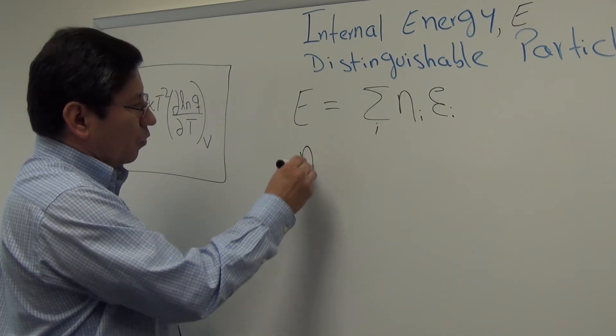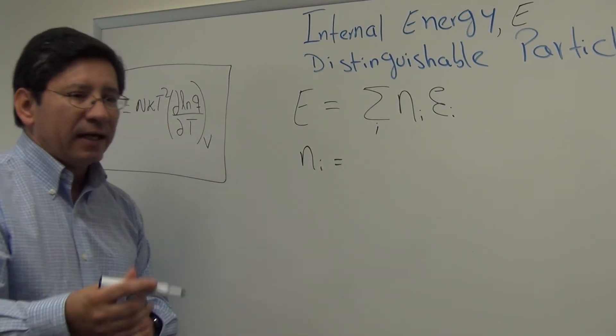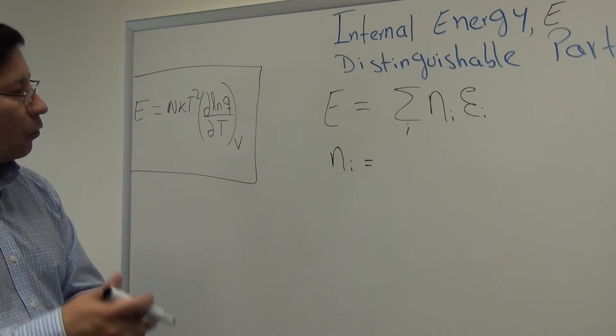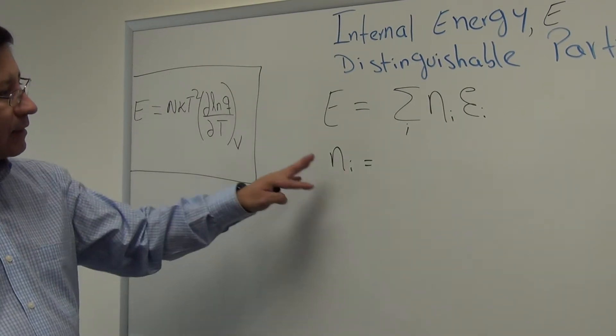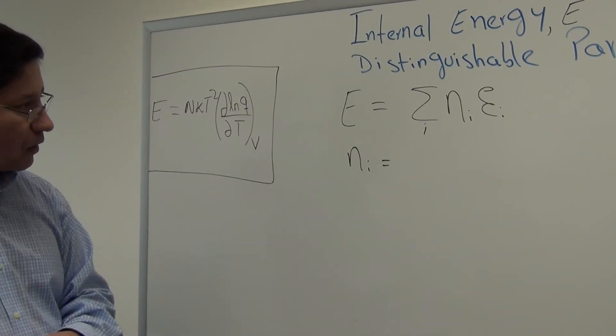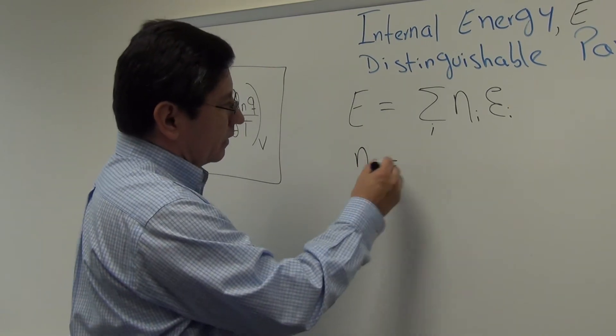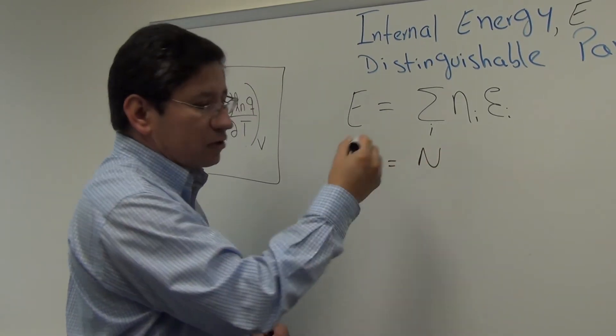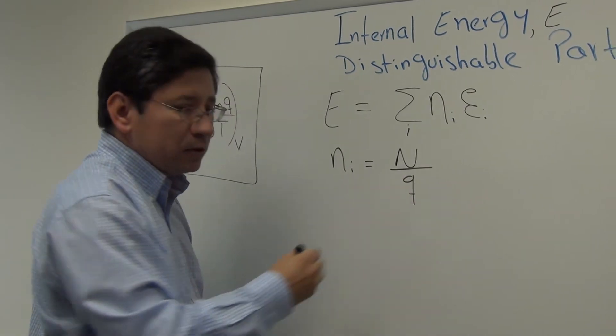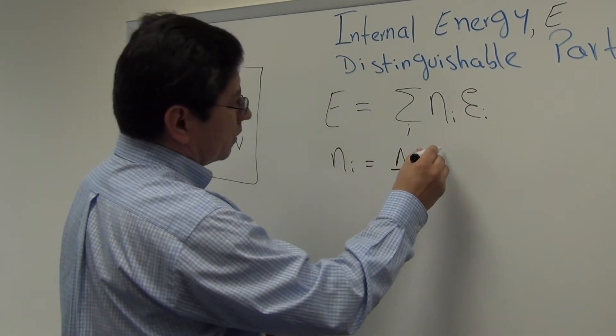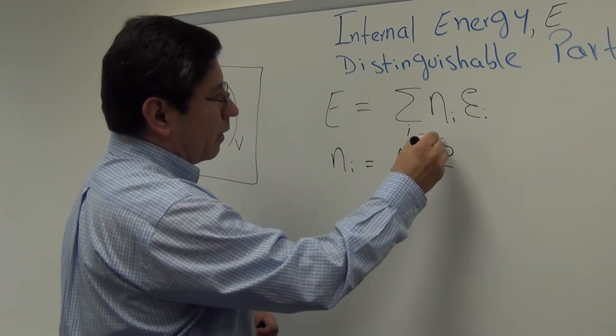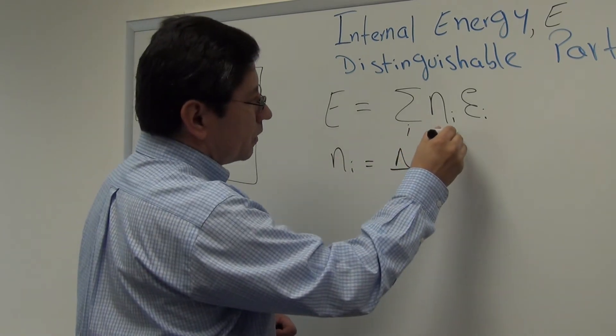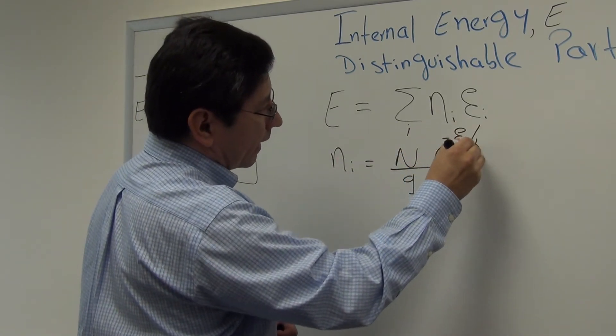The particles occupying a given energy state. So N is going to be the number of particles occupying the energy state I, which happens to have an energy E sub I. So starting here, we should be able to arrive here. Okay, let's do it. So Ni, what is Ni? How can we obtain Ni? Well, Ni is given by Boltzmann distribution, as we learned in class. Ni, then, is given as N, the total number of particles, divided by Q, the partition function, and E to minus EI over KT.